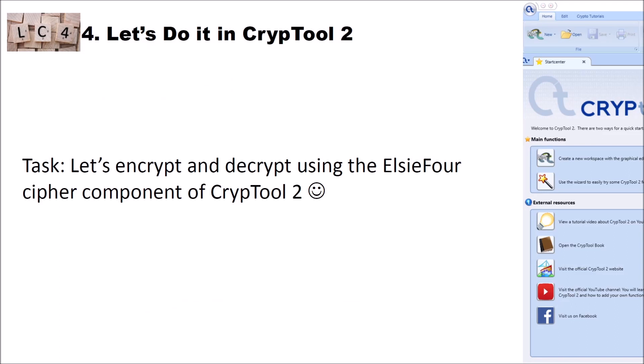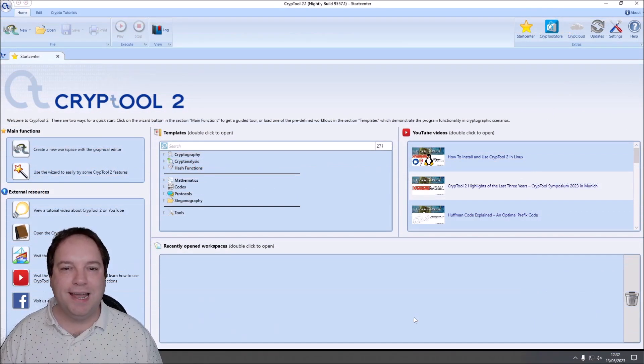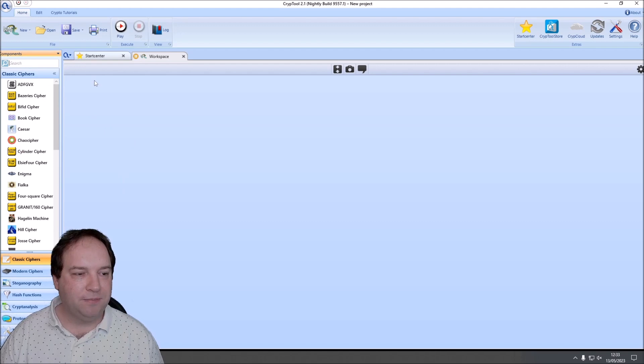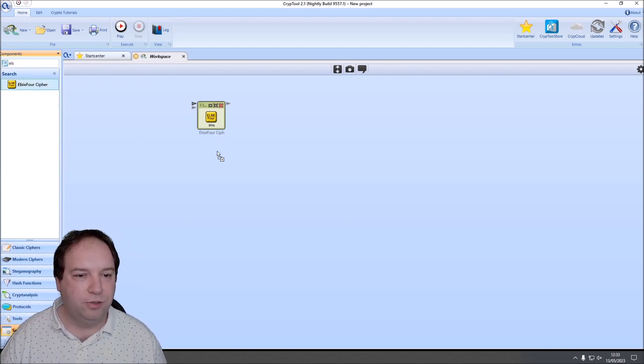Now that we know how the cipher works and its key space size and unicity distance, let's encrypt and decrypt using the LC4 cipher component of CrypTool 2. I'm here now in the current nightly build of CrypTool 2 version 955.7.1 and I want to show you how you can create a workspace using LC4. To do so, we click here to create a new workspace. Then I search for the LC4 cipher component and drag and drop it two times onto the workspace, because I want to encrypt and decrypt.